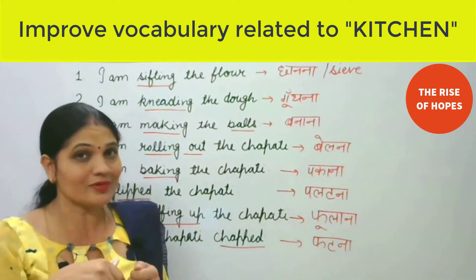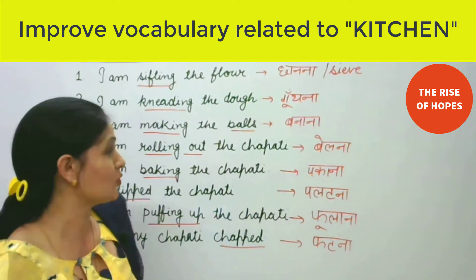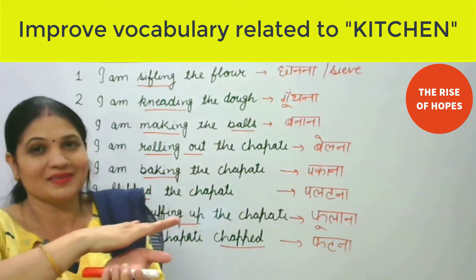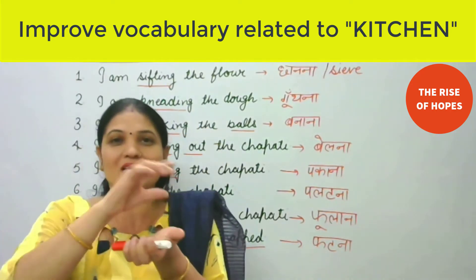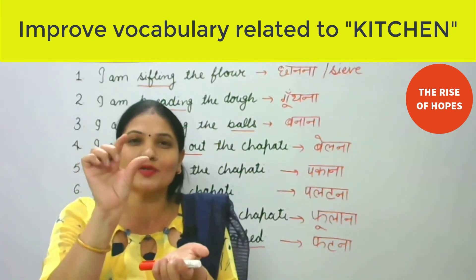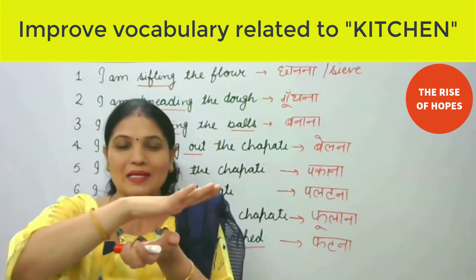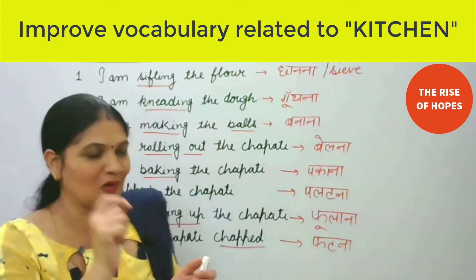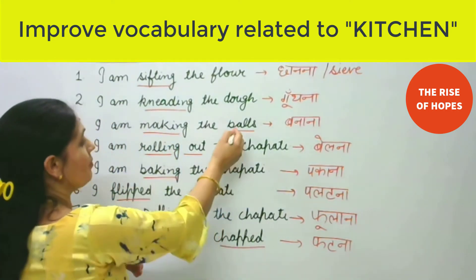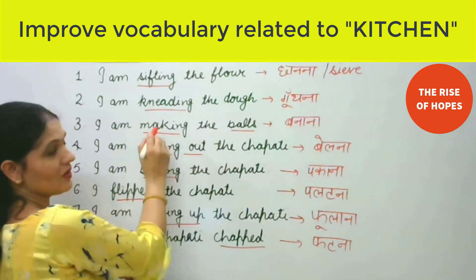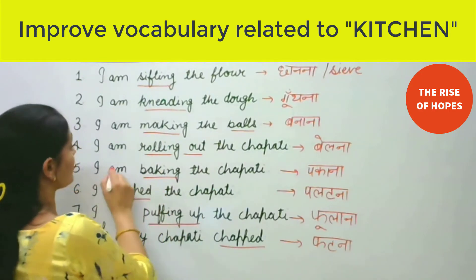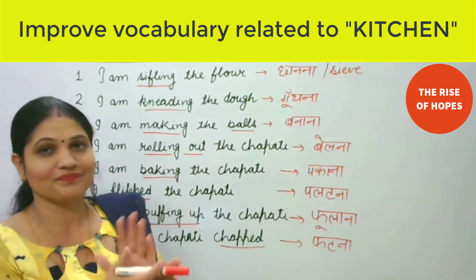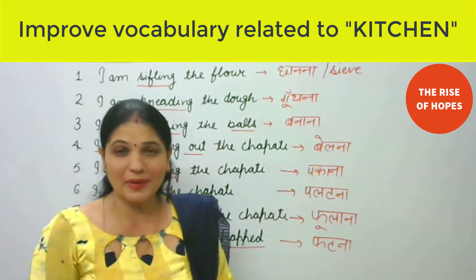Aata guth liya, uske baad kya process hoga? I am making the balls. Ham jo balls banana daate hain — chhoti chhoti roti banane se pehle. That is, I am making the balls. Unko hum balls bolenge, aur making hota hai banana. Next one, hum kya karenge?